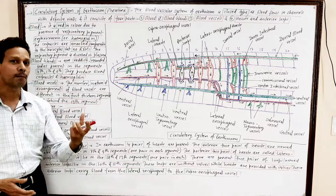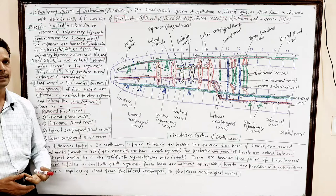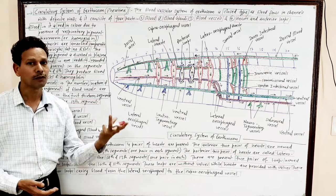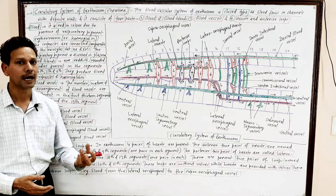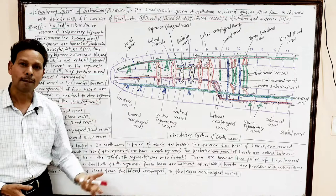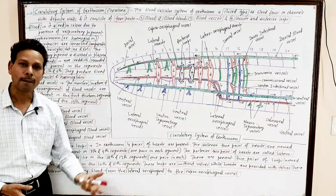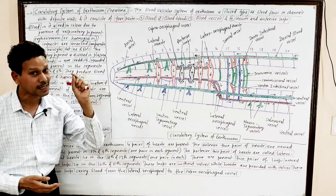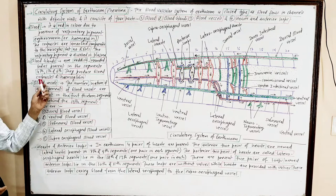The second component is blood glands — very important for competitive exams. In the case of earthworm, segment numbers 4th, 5th, and 6th possess massive reddish bodies named blood glands. These blood glands produce blood corpuscles and the respiratory pigment hemoglobin.